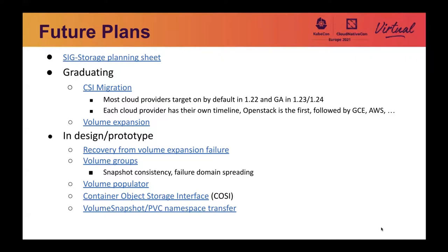Container object storage interface is an attempt to bring object storage like Amazon S3 to Kubernetes pods. It has been in design phase for quite some time. There is a special work group for that. Now we are finishing the API and trying to go alpha in the next release, Kubernetes 1.22. Finally, we are trying to allow users to move PVCs and volume snapshots among namespaces in a safe manner and without races, which is harder than it may seem, and it will take some time until we implement this feature.